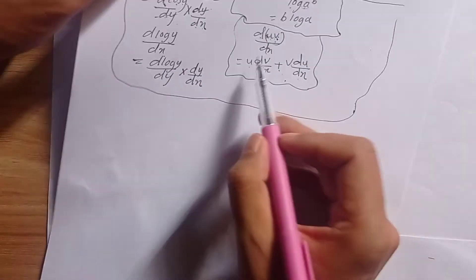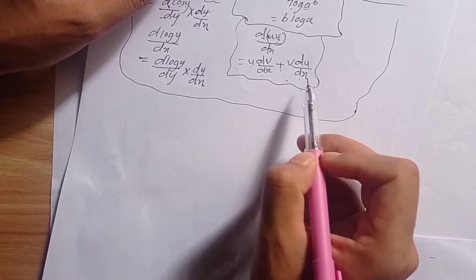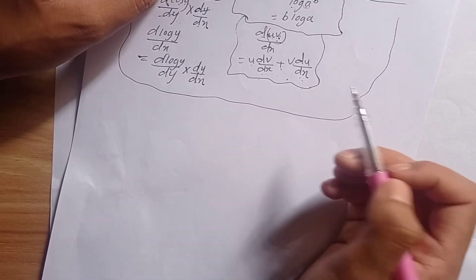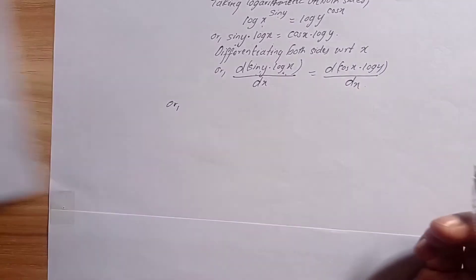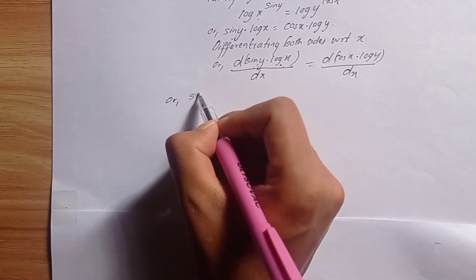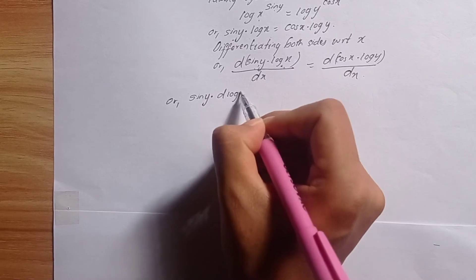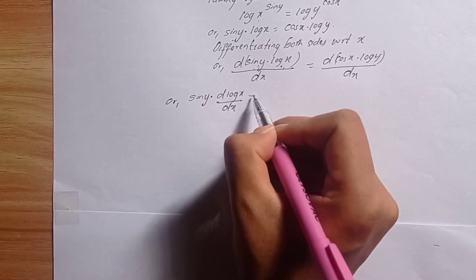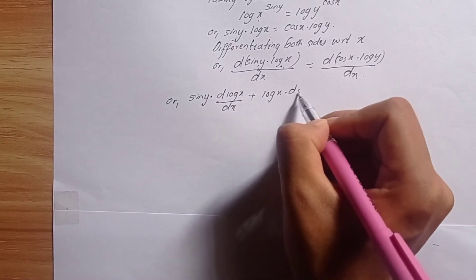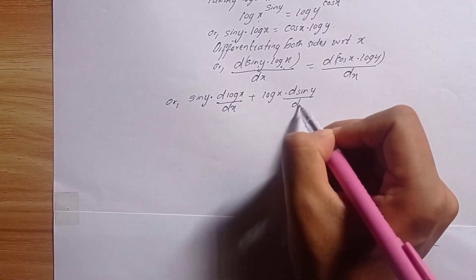This gives us: sin y times the derivative of log x with respect to x, plus log x times the derivative of sin y with respect to x.